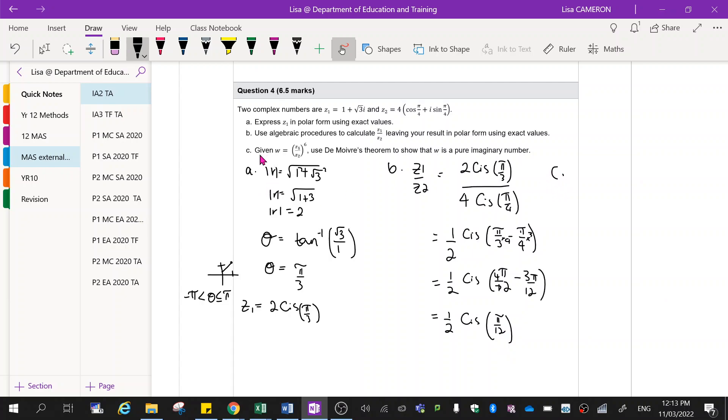Now part C. So given that W is equal to this, we're going to use de Moivre's theorem to show that W is a purely imaginary number. So W equals the answer from the last one and we're going to make sure that we show that that is imaginary.